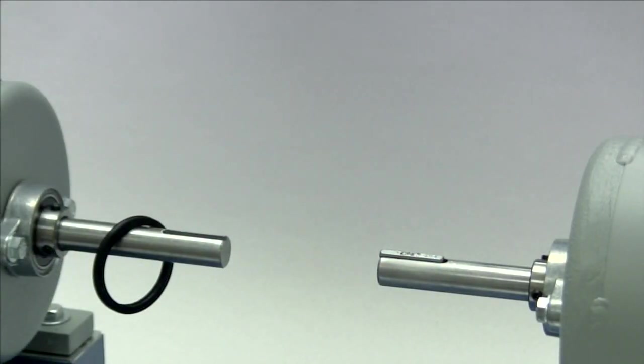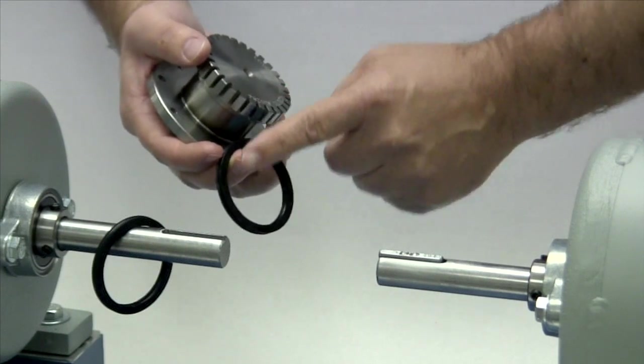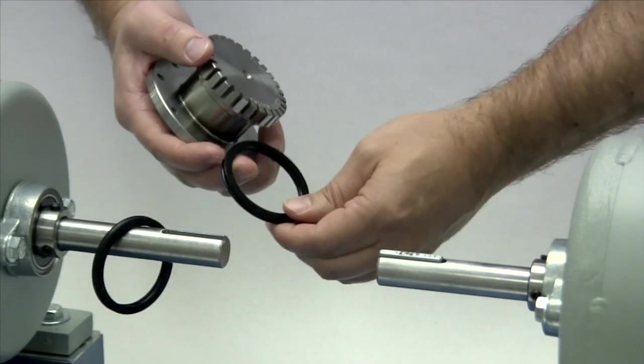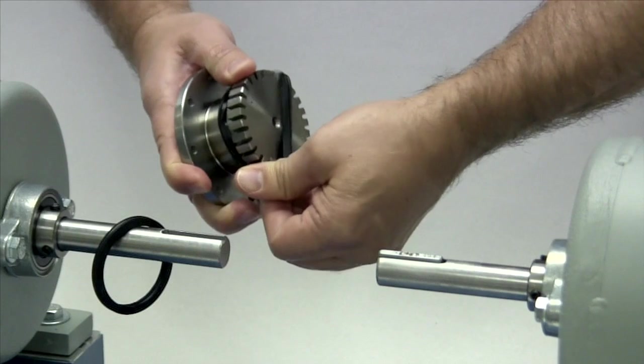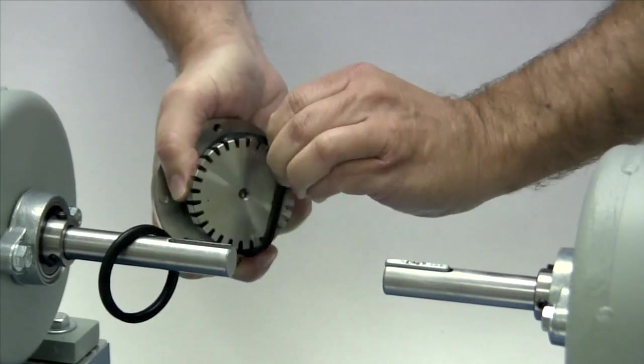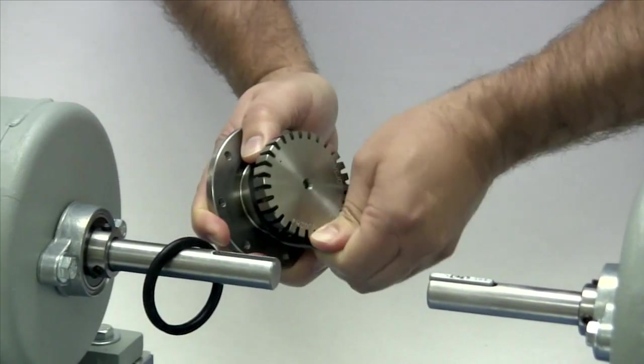Lightly lubricate both seals and place the first seal on the shaft where the standard hub will be mounted. Then carefully stretch the second seal over the grid teeth on the spacer hub and set this hub aside until we mount the shaft hub.